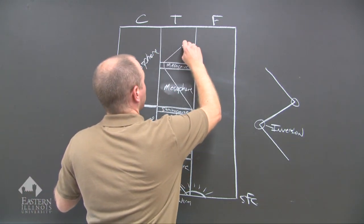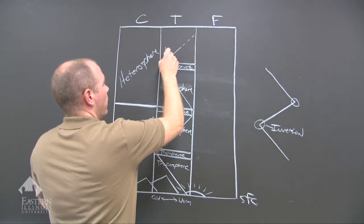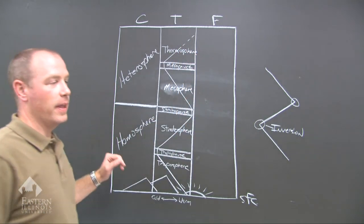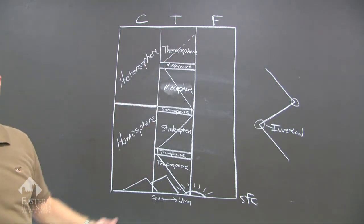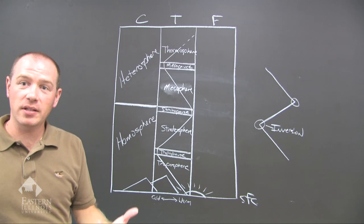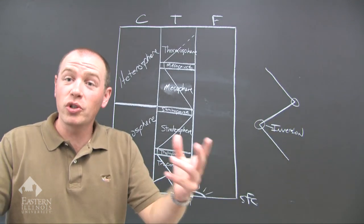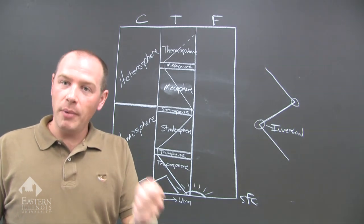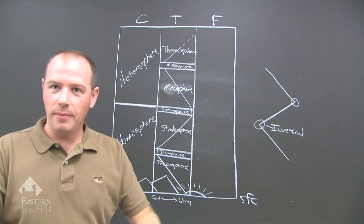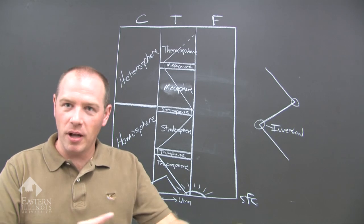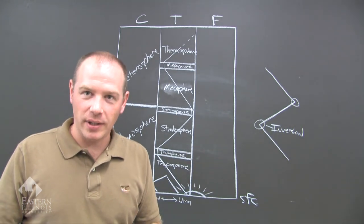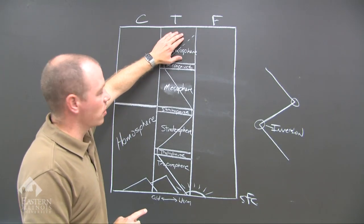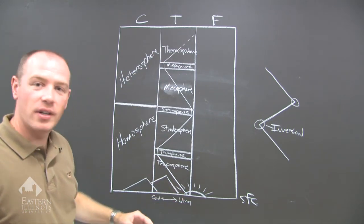Finally, the temperature increases in the last shell, which we refer to as the thermosphere — the heat sphere. Notice the dashed line up here: it indicates that we really cannot measure the temperature here because the molecules are so far apart. To measure heat with a traditional thermometer, molecules have to be bouncing on and off the bulb. The faster the molecules move, the warmer it is; the slower they move, the colder it is. Up here, molecules are so far apart, while down toward the surface they're right next to each other.